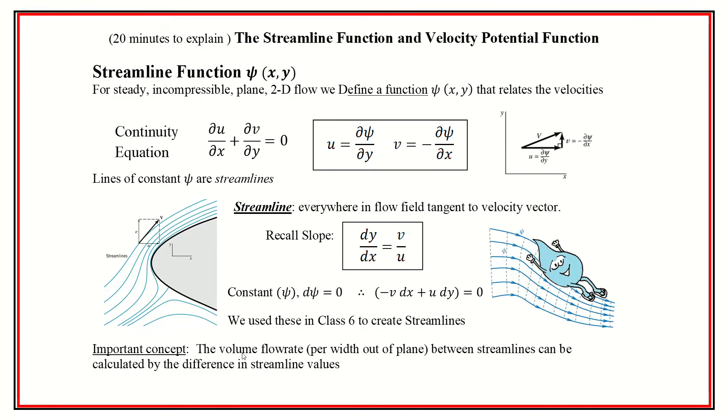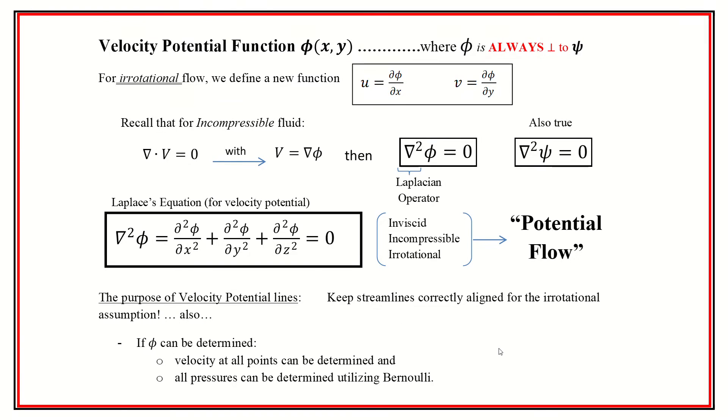And one of the important usefulnesses of this is that we can actually find the flow rate, which is the width out of plane, unit width out of plane, excuse me, between the streamlines. Actually, we can find, you know, their values, the values that we set them equal to, can be used to calculate the flow rate between the streamlines. Kind of interesting that way.